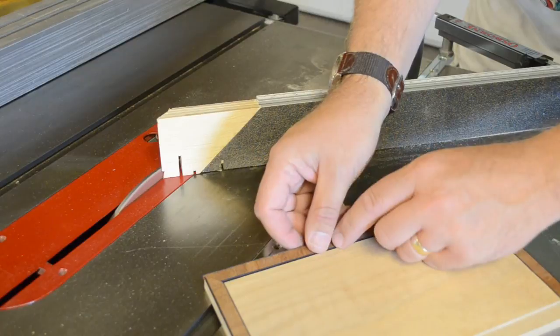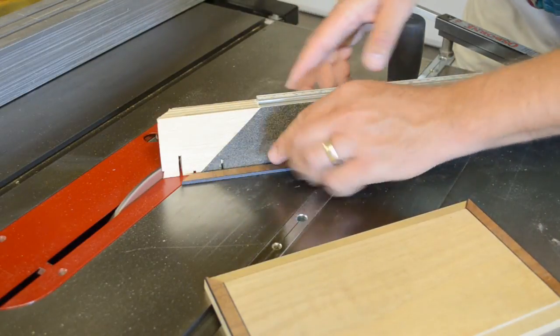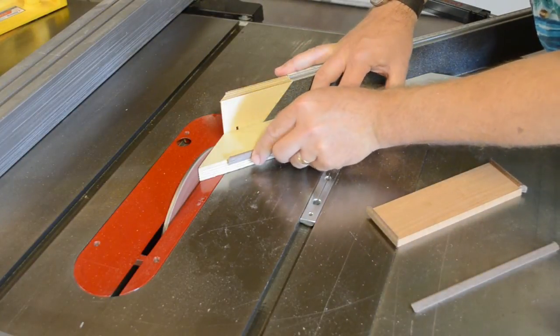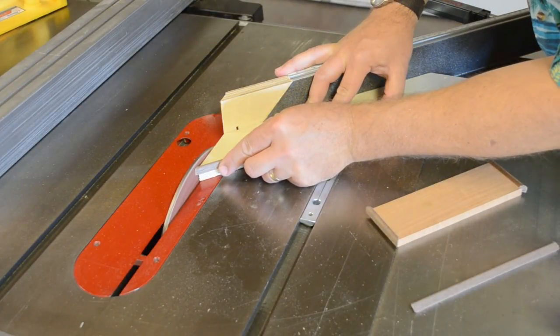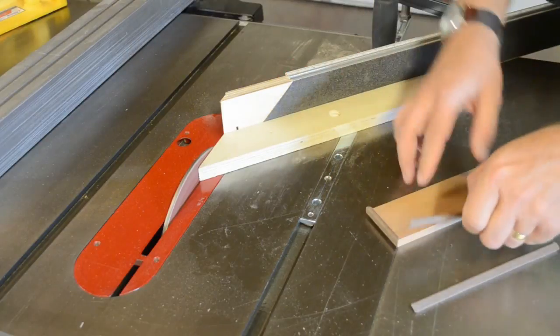But by combining the easy and accurate angle settings of the EB-3 with a sanding disc in the table saw, fragile trim and moldings can be quickly mitered and fitted with minimal effort and risk.